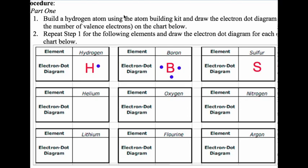Sulfur is atomic number 16. It has 16 protons and 16 electrons. Of those 16 electrons, two are in the first shell, eight in the second shell, and six are in the third shell. So for sulfur we put six dots — one on each side first, then doubling up for the remaining two.